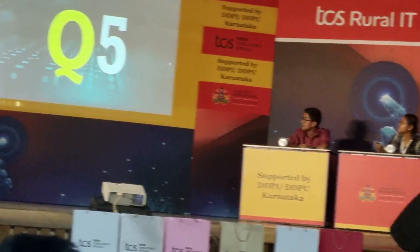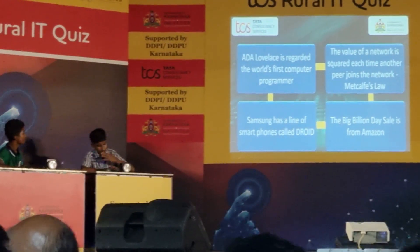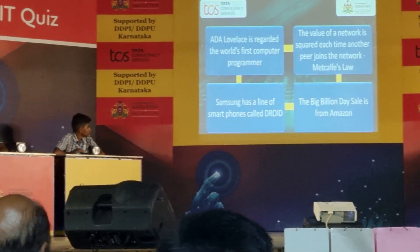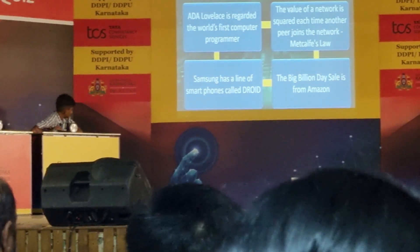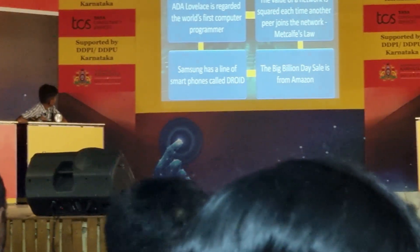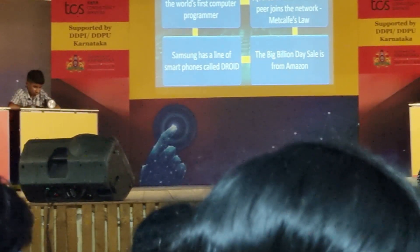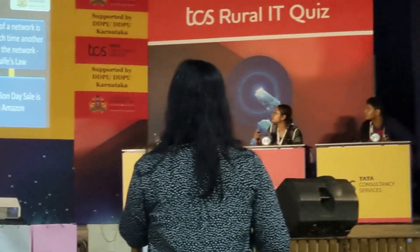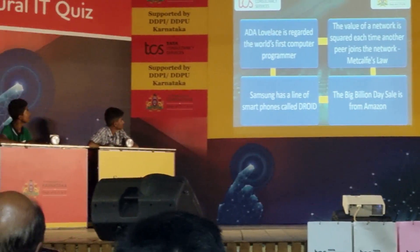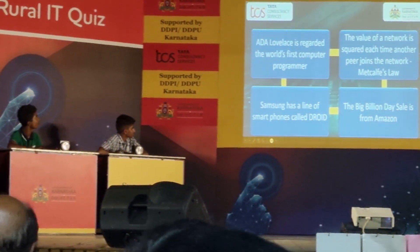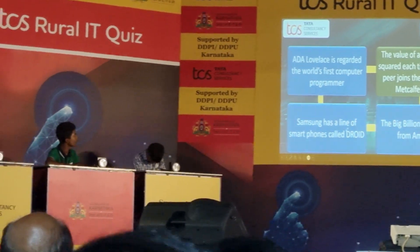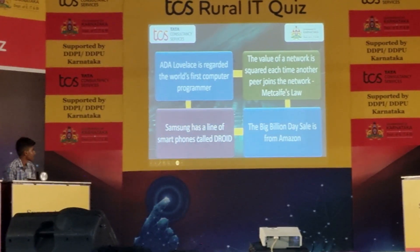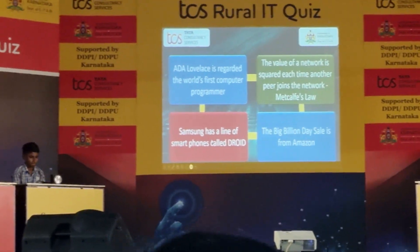Let's move on. Next question, question number 5. Shraddha, your direct question coming up. Go ahead Shraddha — first answer. The value of a network — absolutely right, 50 points. Second answer: Samsung has a line of smartphones now — that is the wrong one, so you get 50 points. Let's move on.